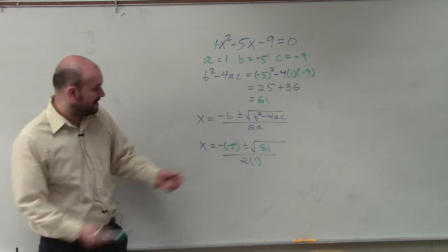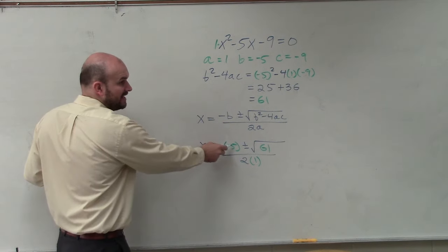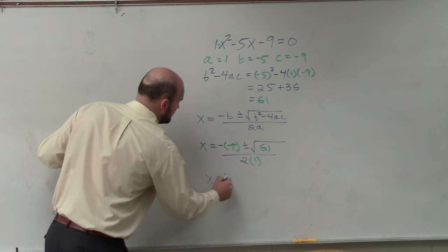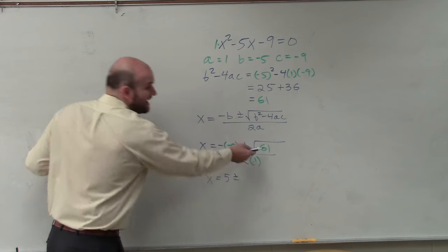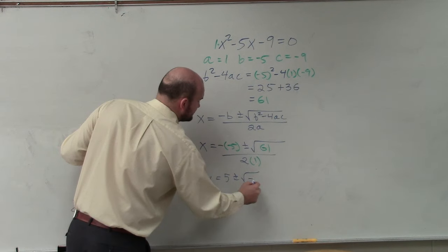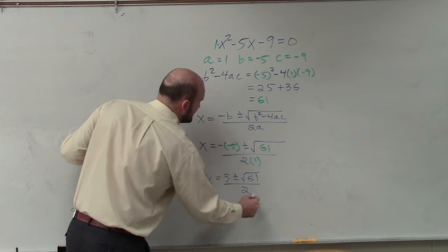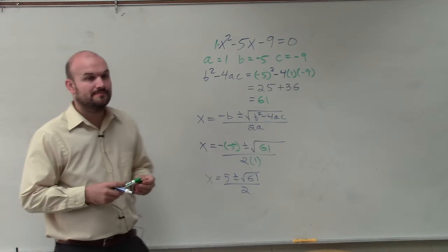So now we just simplify. Well, opposite of negative 5 is going to be 5 plus or minus. I cannot take the square root of 61. So I'm going to leave it like that. And then that's over 2. OK? Yes?